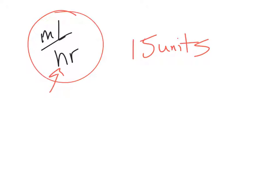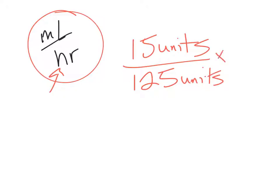So we need to take that. This just becomes a dosage calculation. We take 125 units per 250 milliliters, and we would end up taking 15 divided by 125 times 250 to get our answer.